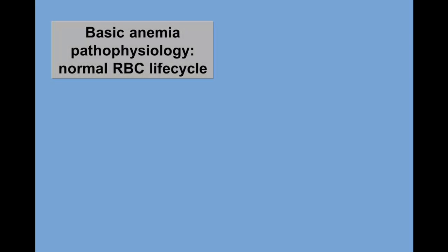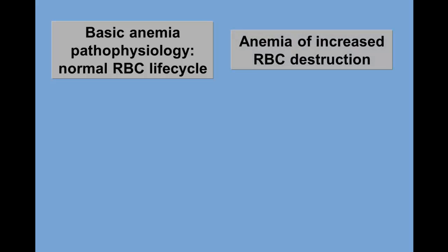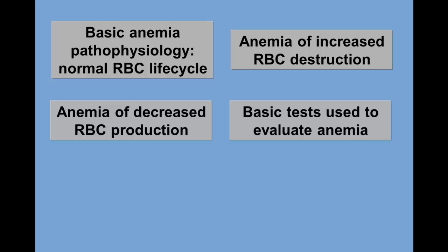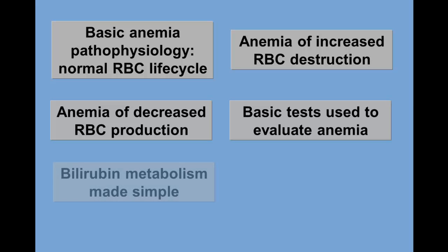This session covered a lot of material. If it went too fast, you might want to take a few minutes and review some of the background videos. Click on these boxes if you want to review basic anemia pathophysiology, the normal red cell life cycle, the anemia of increased red cell destruction, the anemia of decreased red cell production, basic tests used to evaluate anemia, or bilirubin metabolism made simple.